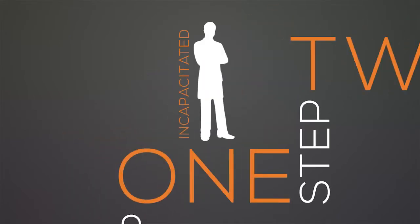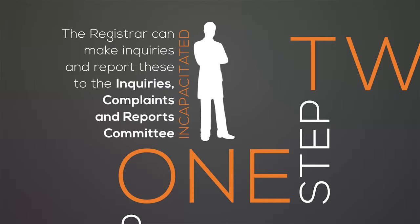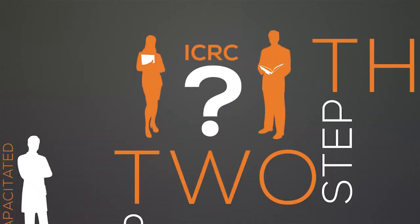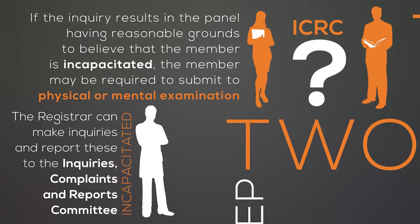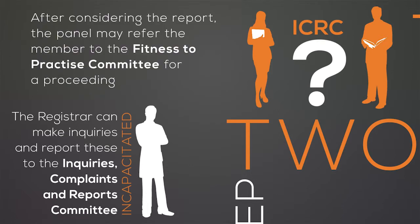Step 1: If the registrar believes that a member is incapacitated, they can make inquiries and report these to the Inquiries, Complaints and Reports Committee. Step 2: The ICRC may then appoint a panel to inquire into whether the member is in fact incapacitated. If the inquiry results in the panel having reasonable grounds to believe that the member is incapacitated, the member may be required to submit to physical or mental examination. Both the member and the panel receive a copy of the report. After considering the report, the panel may refer the member to the Fitness to Practice Committee for a proceeding.